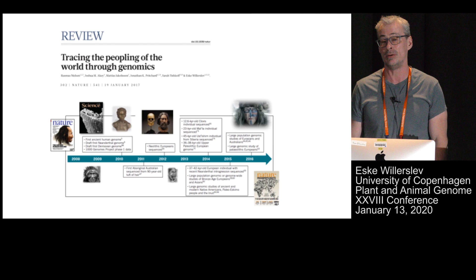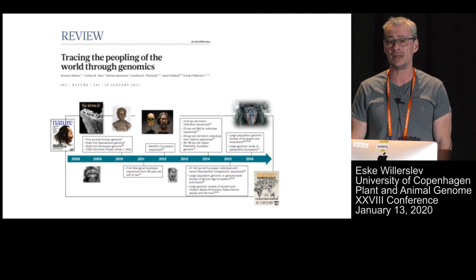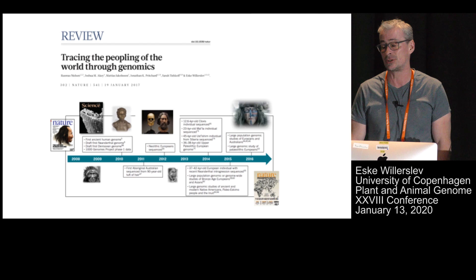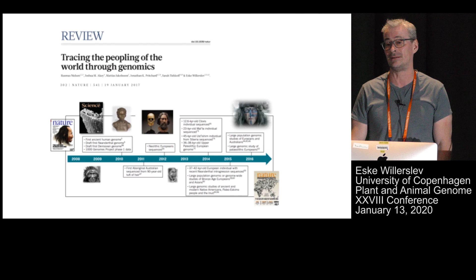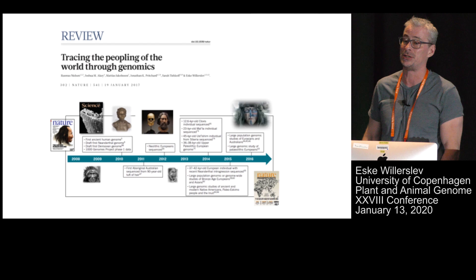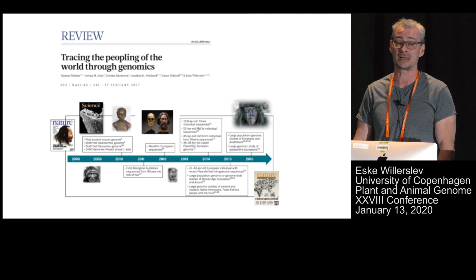We did the first ancient human genome in 2010. After that, because of improved methods and it's also become cheaper to sequence, we sequenced ancient human genomes all over the world. Going from studies where we just did a single genome and analyzed it, now we're in a situation where we can do basically hundreds of ancient genomes and do real past population genetic studies.